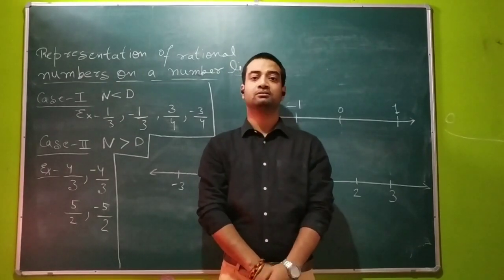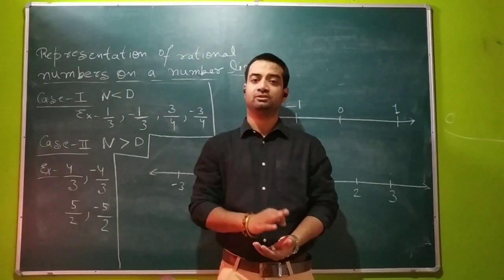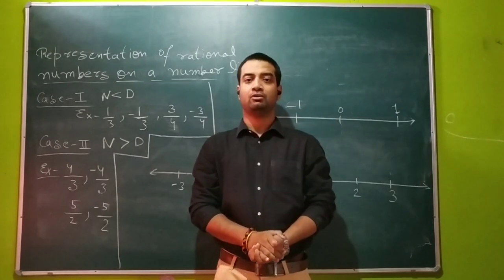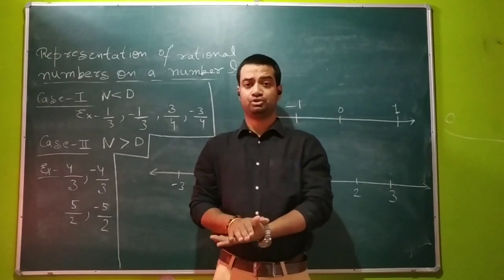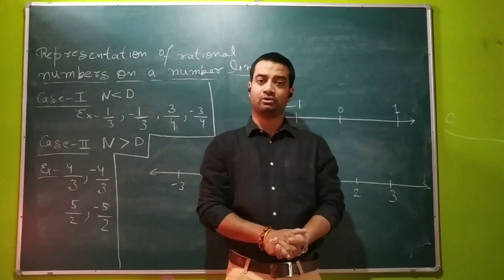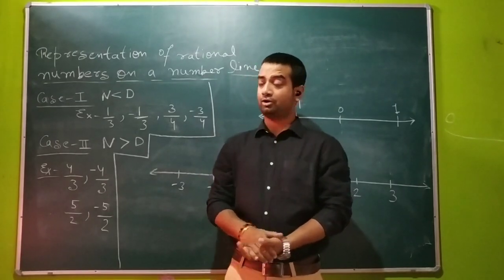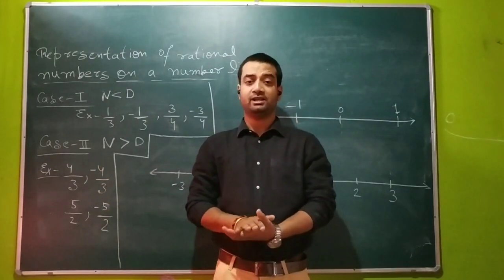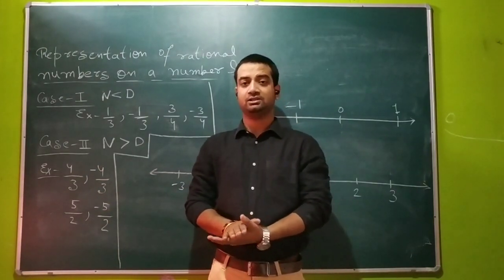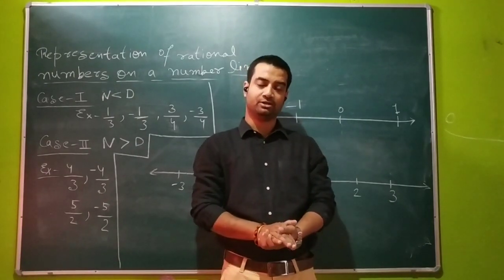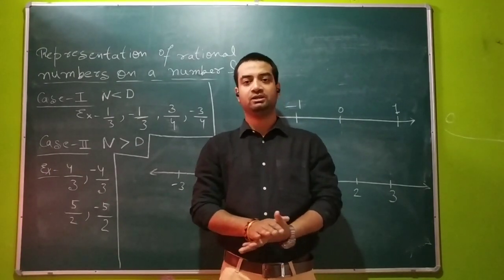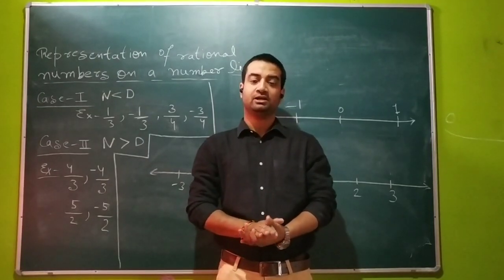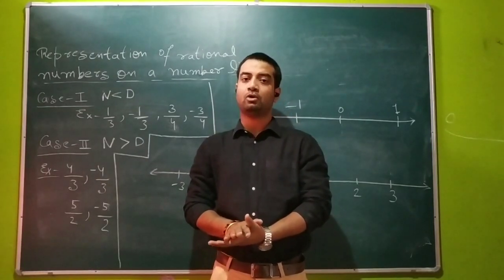It's also not quite difficult. You just have to keep a few things in your mind. Firstly, for whichever rational number you have to show on the number line, find out whether it falls under case 1 or case 2. In any rational number, either the numerator will be less than the denominator, or the numerator will be greater than the denominator. If the numerator is equal to the denominator, then it will be 1 or minus 1.